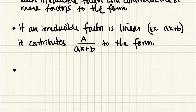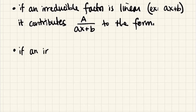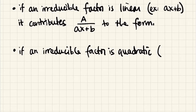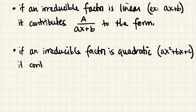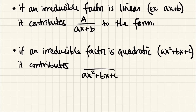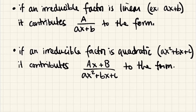You could also have an irreducible quadratic factor — for example, Ax squared plus Bx plus C. In that case it contributes a term with itself in the denominator, but the numerator is not a single letter. The numerator is a linear form involving two capital letters, like Ax plus B. We haven't encountered that in an example yet, but we will.